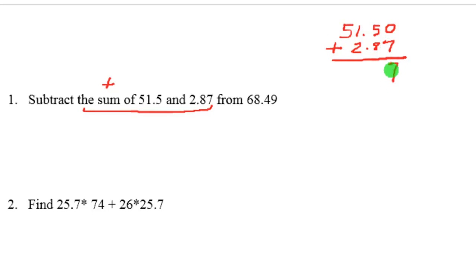Let's put a 0 here so that the 7 can go right under that, and we're going to add. 0 plus 7 is 7, 5 plus 8 is 13, so put the 3 and carry the 1. That's 1 plus 1 is 2 plus 2 is 4, so that is 54.37, 54 and 37 hundredths.